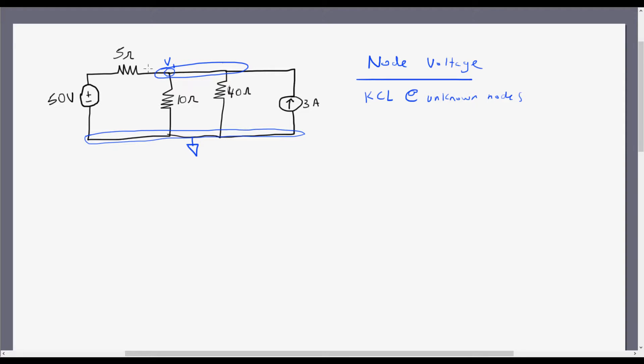Now KCL says all the current entering a node has to also be leaving the node, or if I sum all of my currents leaving the node, they have to all equal zero. So what I'm going to do is I'm going to sum all the currents leaving my node and set it equal to zero.